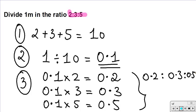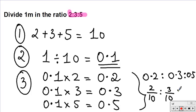You can also write it as a fraction if you want to. 0.2 is the same as 2 over 10, 0.3 is the same as 3 over 10, and 0.5 is the same as 5 over 10. That's my answer. I hope that helps, and I'll see you in another video tutorial.